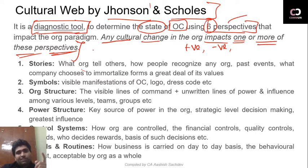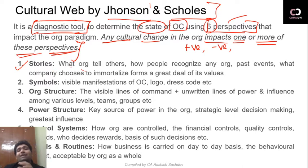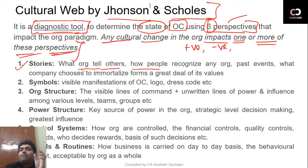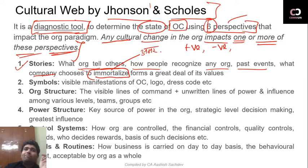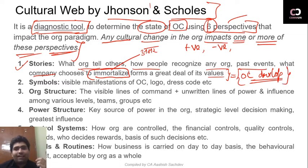The first perspective is Stories. Every organization has some stories — past events that build its history. This is what an organization tells others about how it reached where it is today. There are success stories, struggle stories. How people recognize any organization. The most important role here is played by top-level management — what they immortalize, what they preserve in the organization's narrative, forms the basis of organizational values and culture.